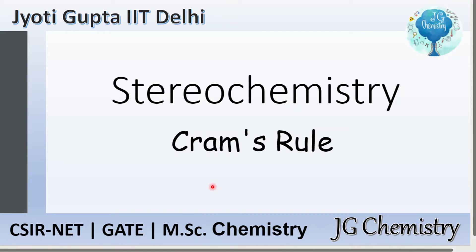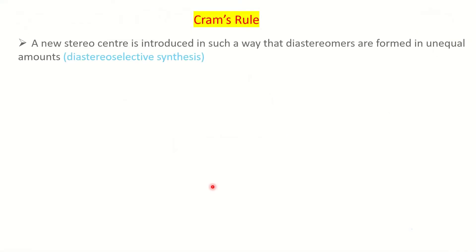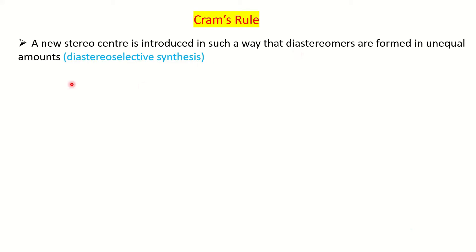Cram's Rule basically involves introducing a new stereocenter, which is the chiral center, in a molecule in such a way that we are generating diastereomers in unequal amounts. Therefore we call it diastereoselective synthesis, because one diastereomer is going to be major and the other is going to be minor. We call it stereoselective synthesis, specifically diastereoselective, because it forms diastereomers.